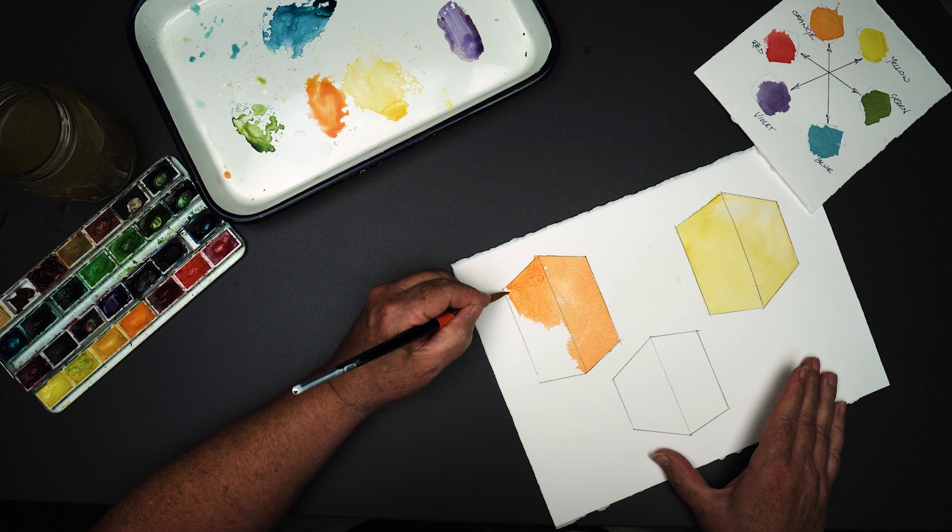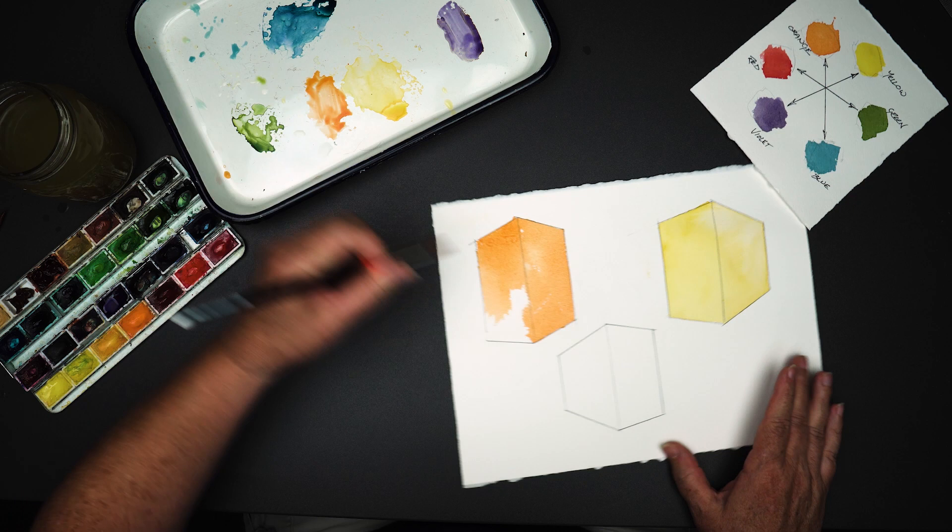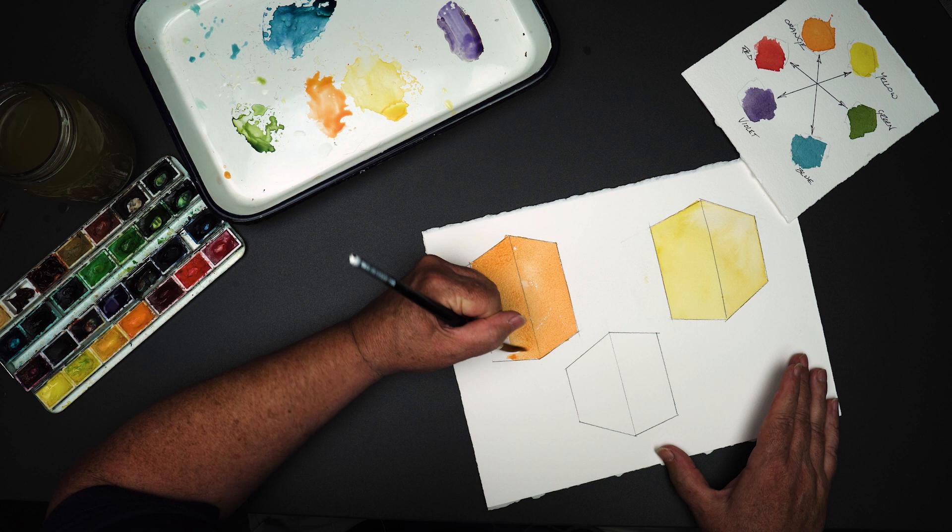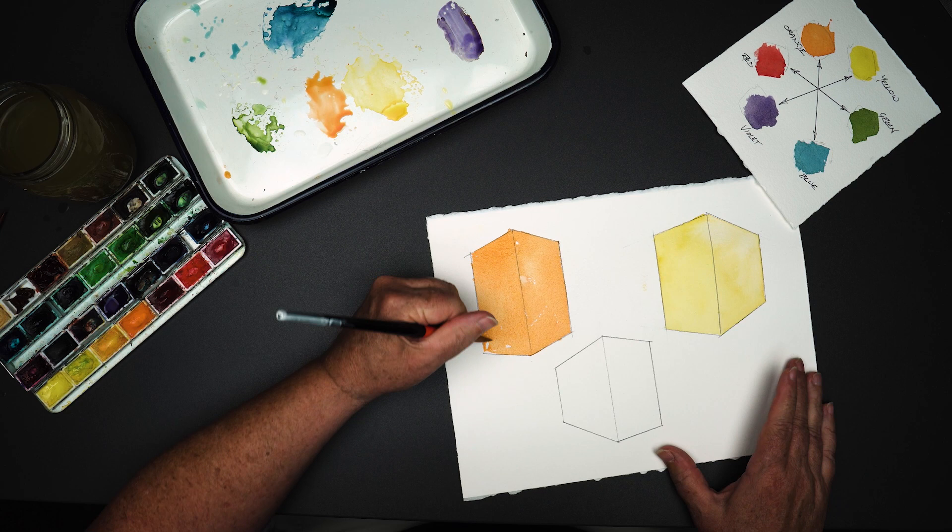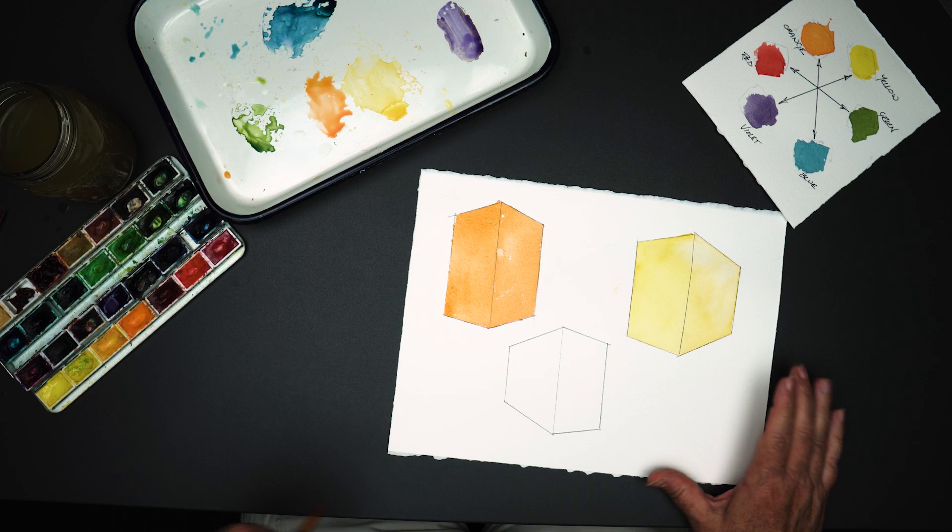So a lot of times people will attempt to create shadows using black and then graying it down and hoping that the color works. More often than not, it doesn't. For example, can you imagine using black to shadow a banana? It just doesn't work.